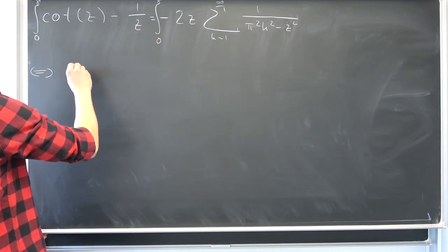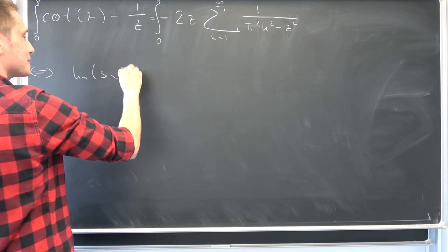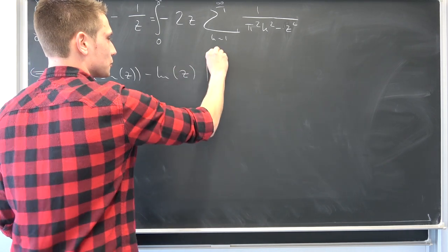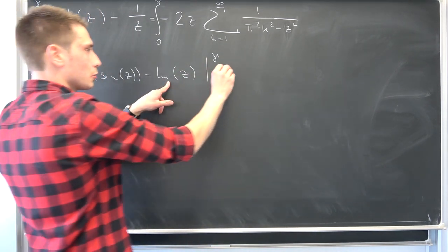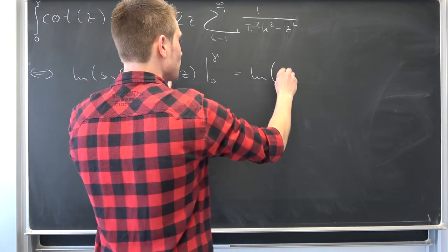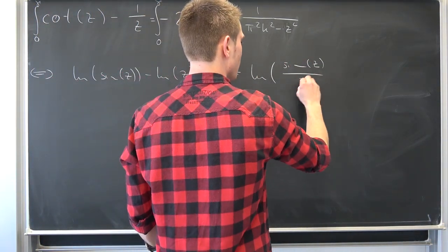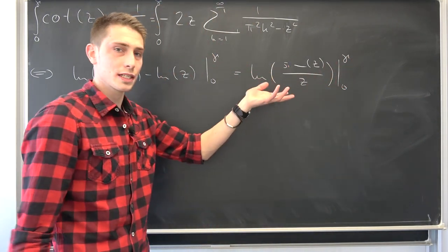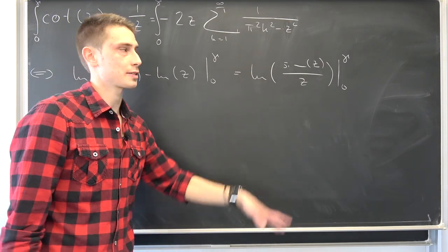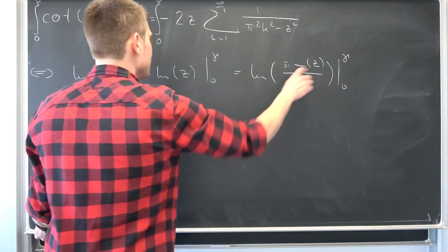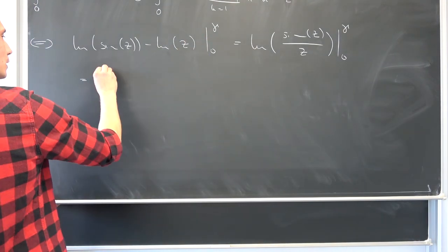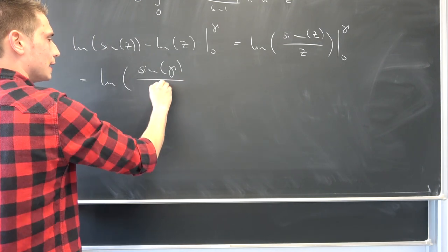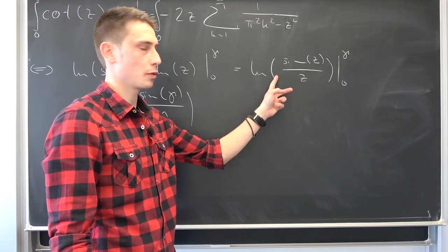That's equivalent to saying we are going to get natural log of sine of z minus the natural log of z from 0 to gamma. The cool thing is we can use the natural log property to turn this into the natural log of sine of z over z from 0 to gamma. Plugging gamma into here really doesn't pose any problems, leaving us with the natural log of sine of gamma over gamma minus the natural log of...